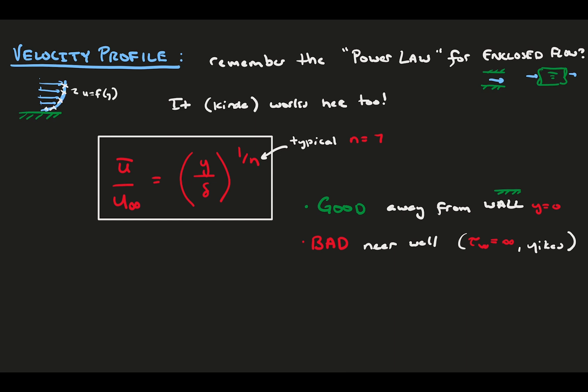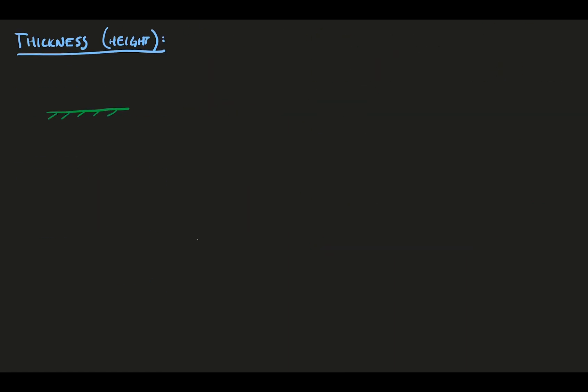This power law is a function to describe the flow velocity profile shape, u, as a function of y. To quantify the thickness or height of this profile, we again use the disturbance thickness, the displacement thickness, and the momentum thickness. Recall the general forms of these flow quantities, which we introduced in a previous video. These general definitions apply to both laminar and turbulent flows.